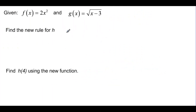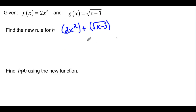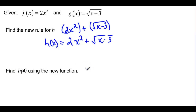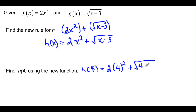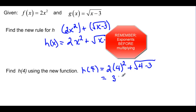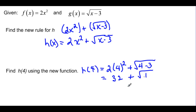With the same two functions, find a new rule. We're adding the two functions, so we have 2x squared added to the square root of x minus 3. None of those are like terms, so h of x is equal to 2x squared plus the square root of x minus 3. Then to find h of 4: 2 times 4 squared is 32, plus the square root of 4 minus 3, which is 1. So it's 32 plus 1, or 33.